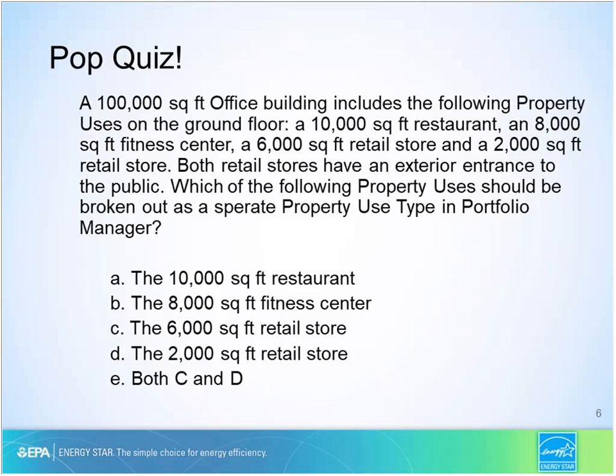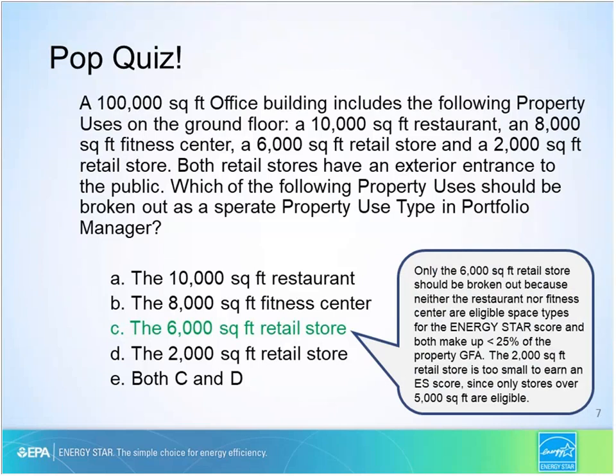Most folks got it correct. The correct answer is the 6,000 square foot retail store should be broken out as a separate property use type. The square footage, use details, and energy consumption of the restaurant, fitness center, and the 2,000 square foot retail store should all be included in the main office property use. The restaurant and fitness center shouldn't be broken out because they are ineligible to earn Energy Star scores. The 2,000 square foot retail store shouldn't be broken out because only retail stores over 5,000 square feet can earn the Energy Star score.